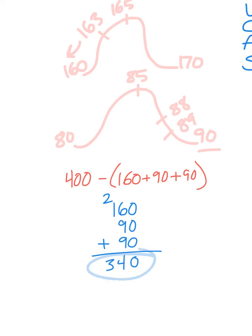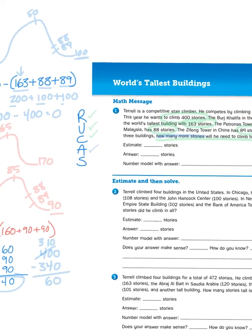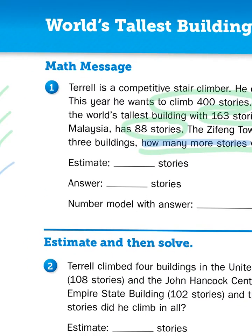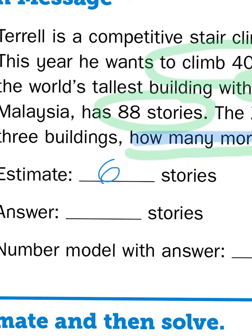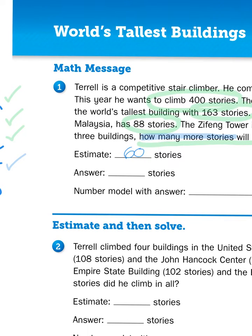I now have to take this total, 340, and subtract it from 400. I'm going to subtract 0 minus 0, that leaves me with 0. I can't take 4 away from 0 so I need to borrow from the 100. I'm going to take 100 and break it into 10 tens. 10 minus 4 is 6 and then 3 minus 3 is 0. So my estimate is 60. That's the number of stories he has left to climb.